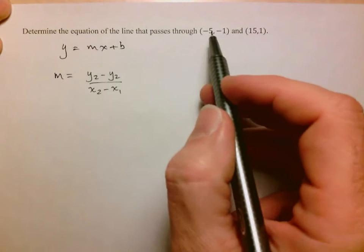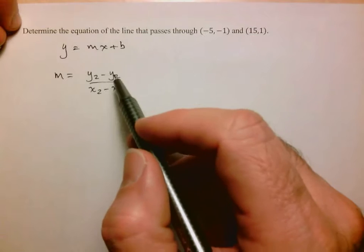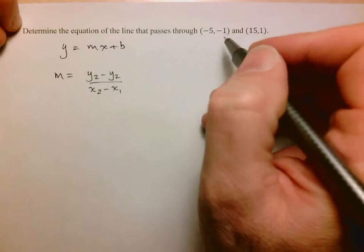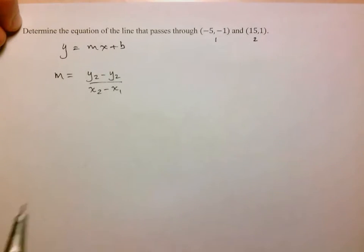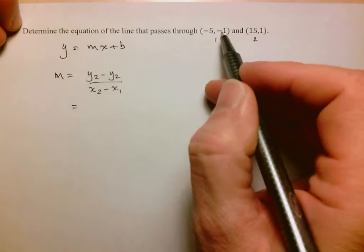Now it doesn't matter which point I start with as long as I keep the same order in numerator and denominator. So let's say I call this point 1 and I call this point 2, so now I do y1 minus y2.